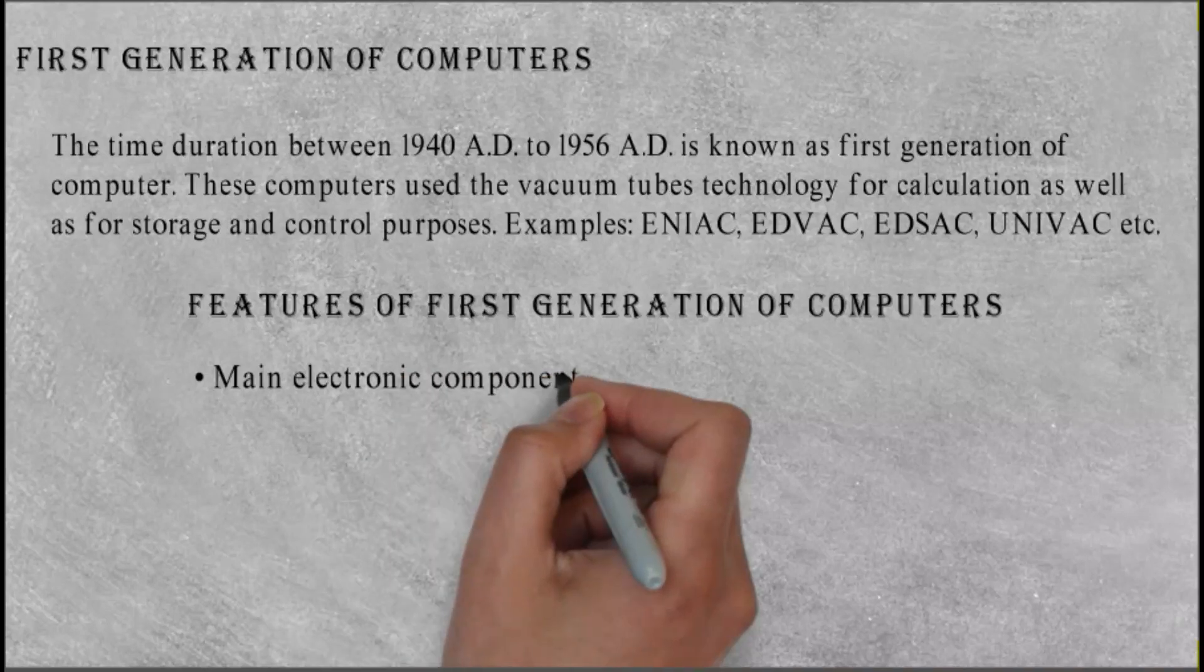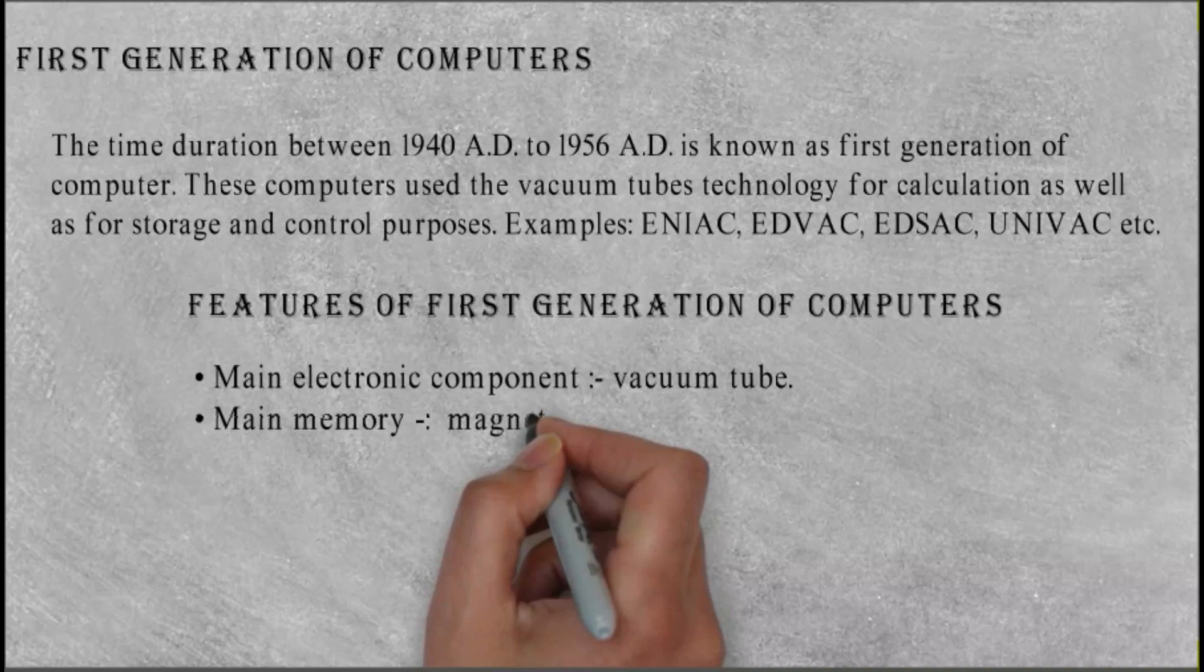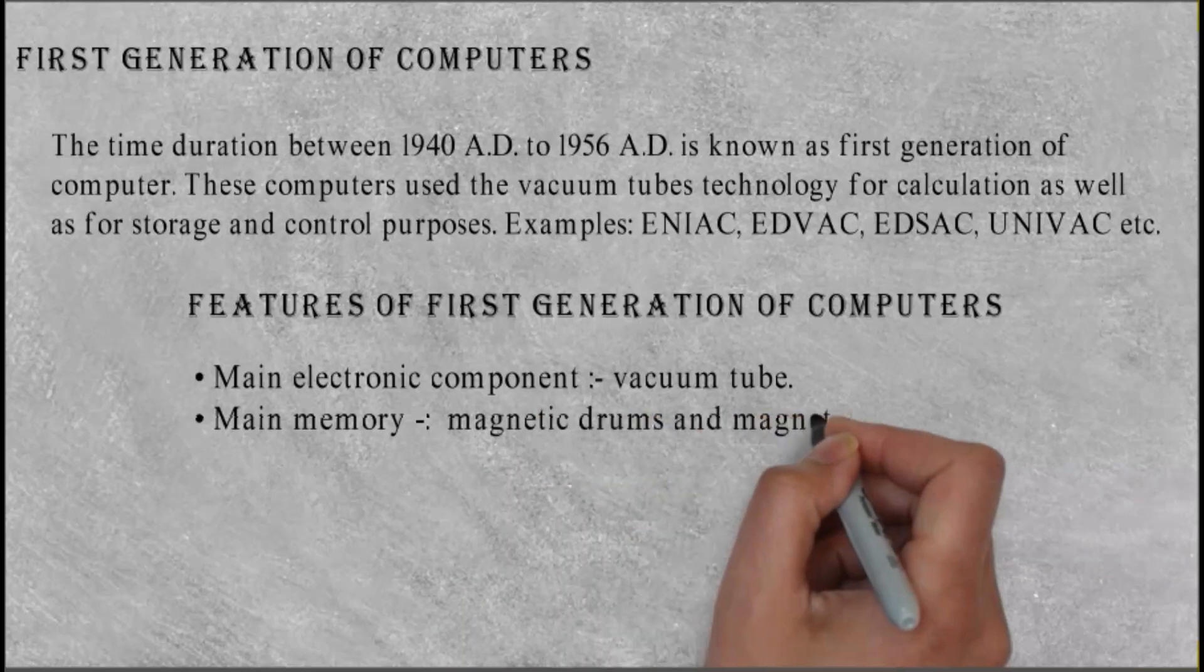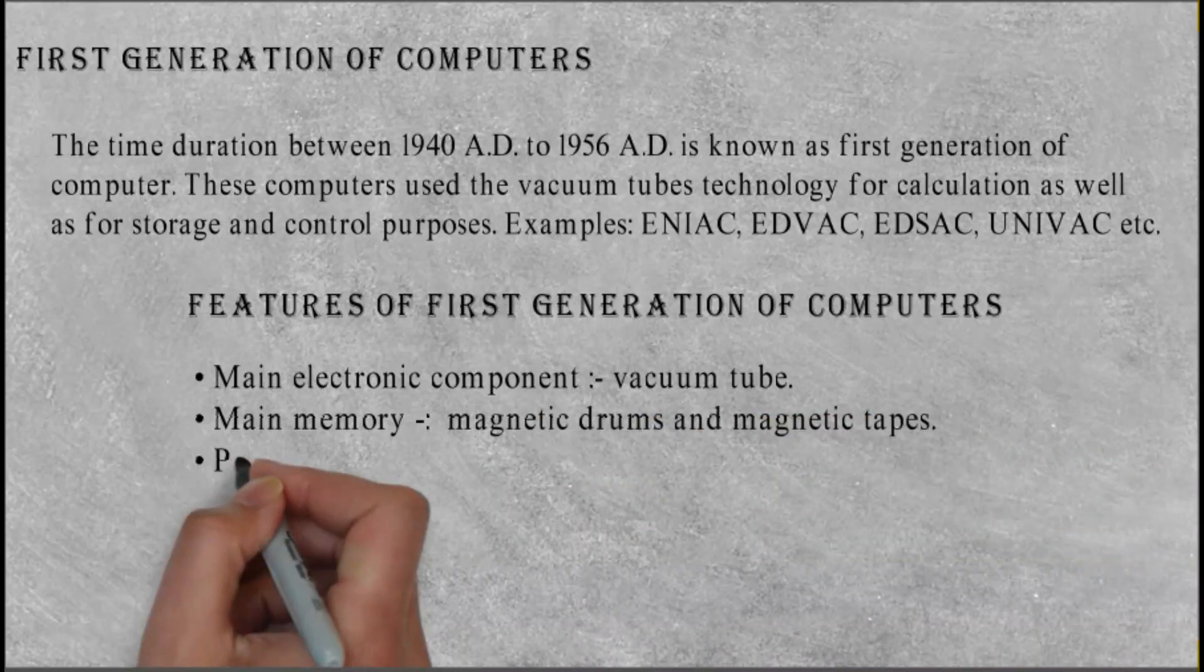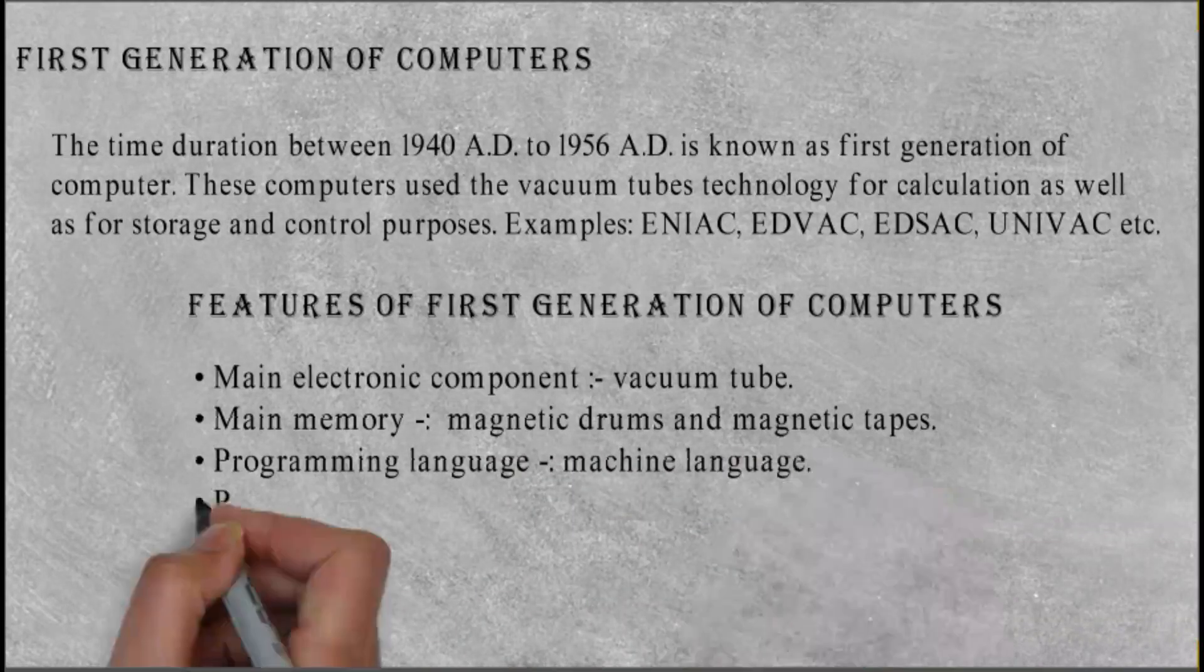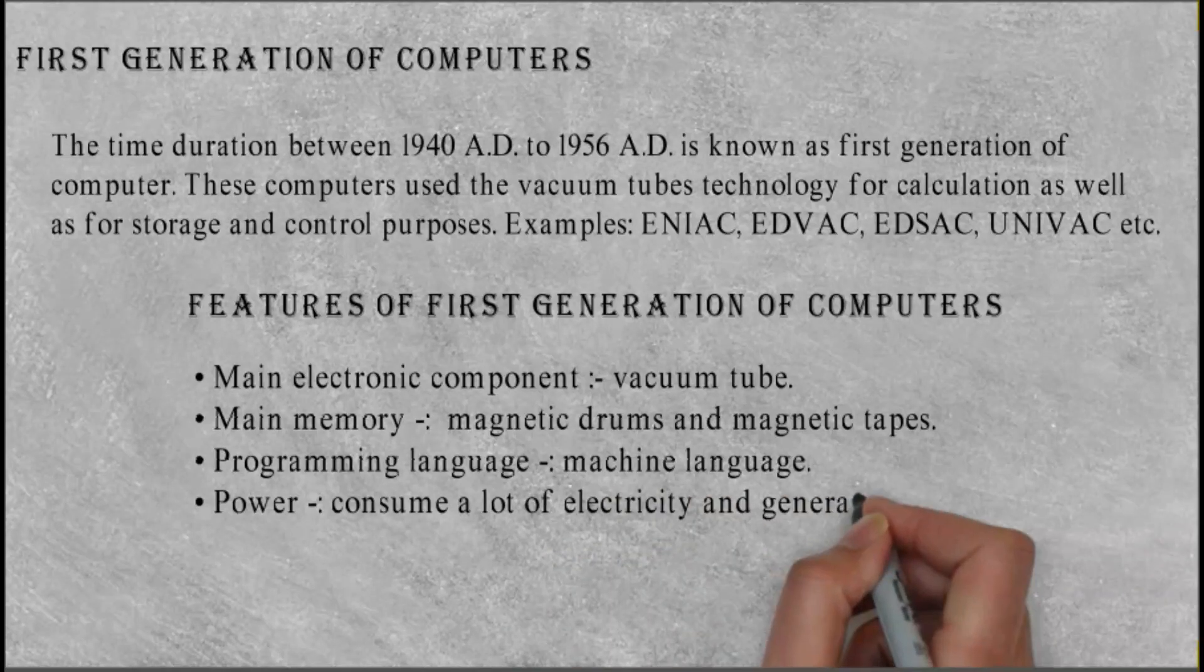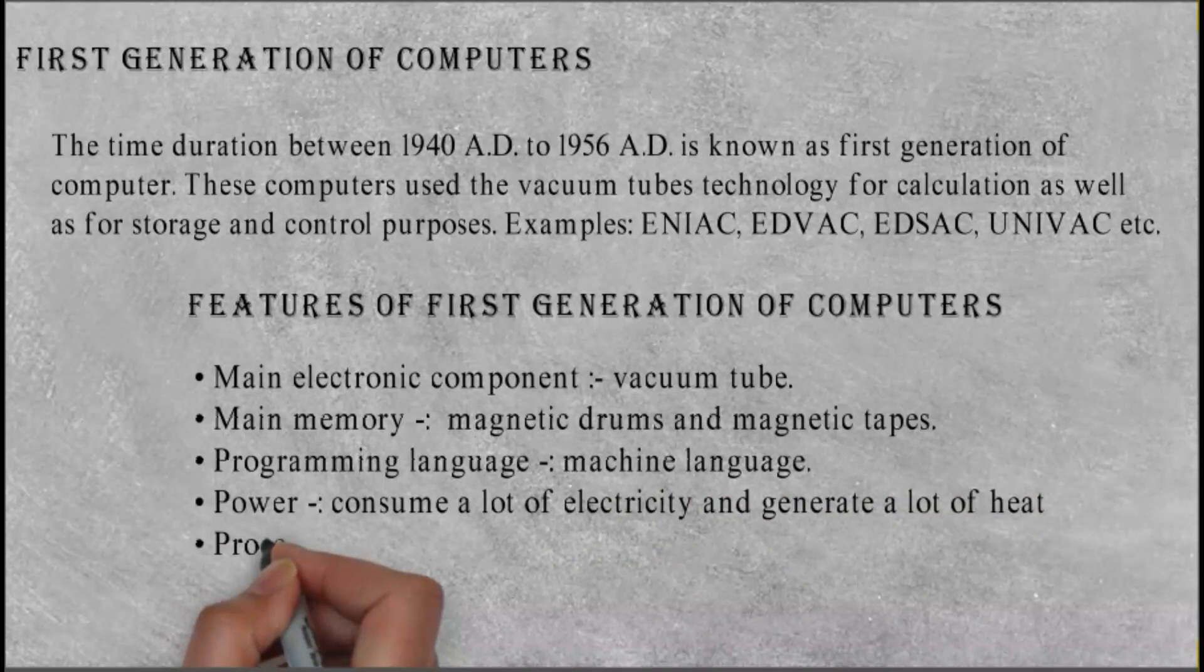Features of First Generation of Computers: Main Electronic Component—Vacuum Tube. Main memory: magnetic drums and magnetic tapes. Programming language: machine language. Power: consume a lot of electricity and generate a lot of heat. Processing speed: milliseconds.